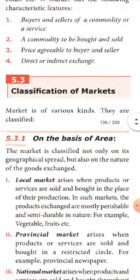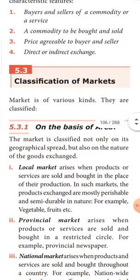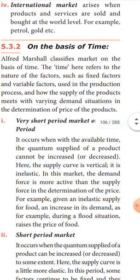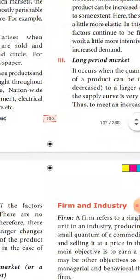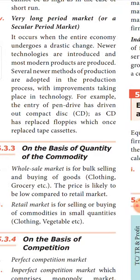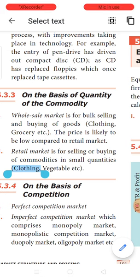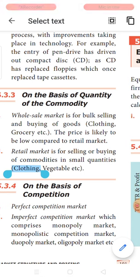Next let us learn about the classification of markets. Markets can be divided on three broad categories — but actually four. One is markets classified based on area; next is market classified on the basis of time; the third is market classified on the basis of the quantity of the commodity being bought; and the fourth is market classified on the basis of competition.